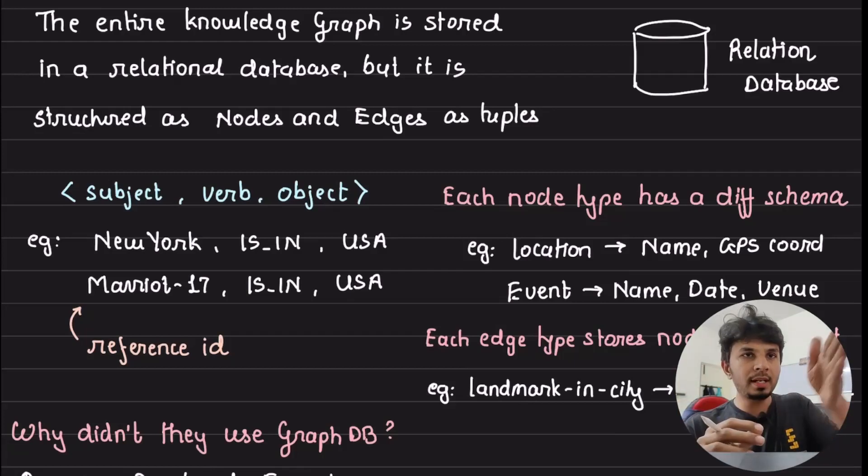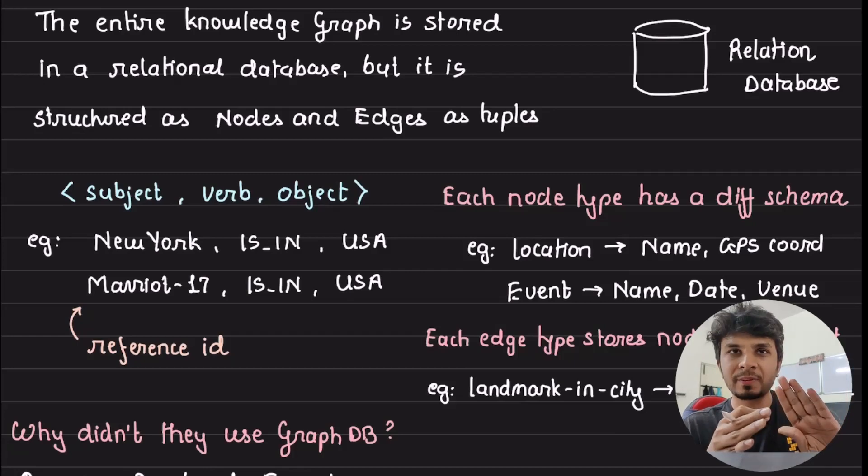For example, New York is in USA, so subject, verb, and object. Basically two nodes connected via an edge, right? So this triplet is what most graph databases use to store this information, which we can very well mimic in a normal relational database within a table with three columns.